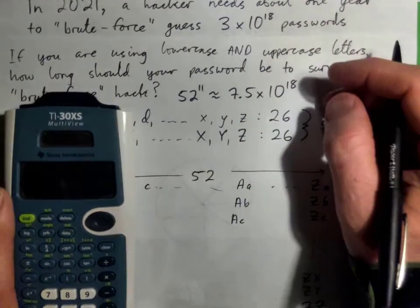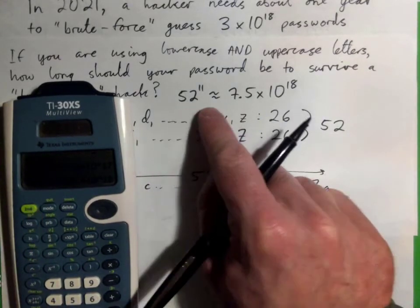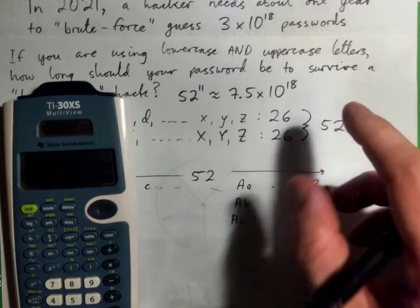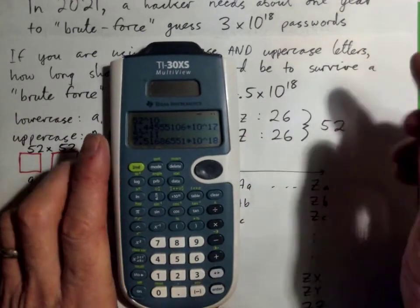to the power of 18. So if your password is 11 letters long and you're using upper and lower case, then there are this many combinations.